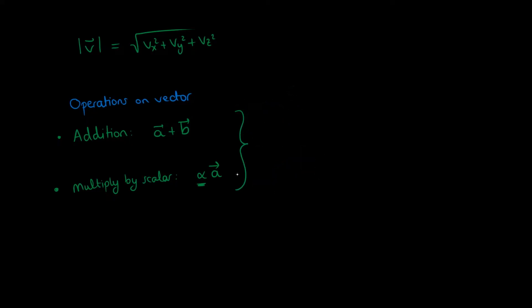Combining addition and multiplication by a scalar we can do linear combinations of vectors. V equals alpha a plus beta b. Notice that if we set alpha equal to 1 and beta equal to minus 1 this is the same as subtraction of vectors.